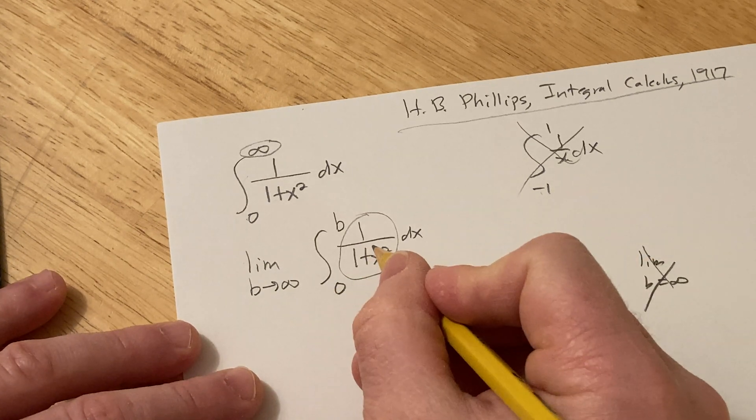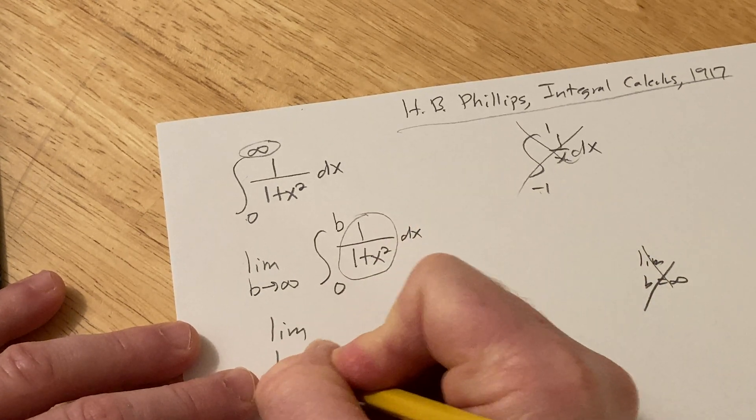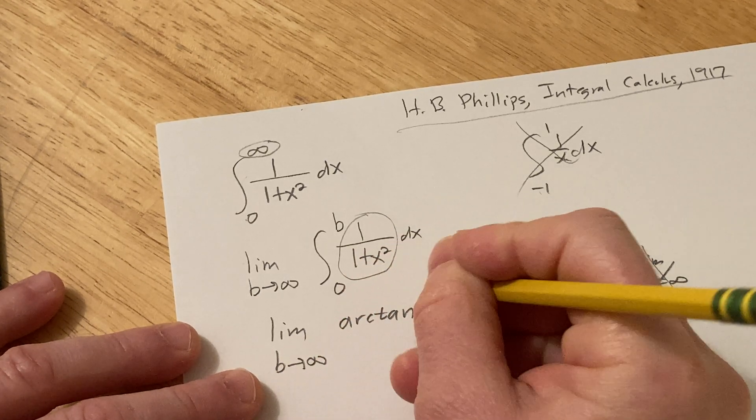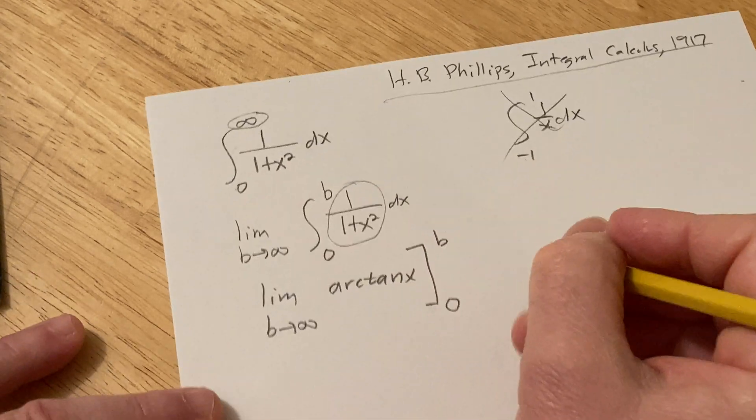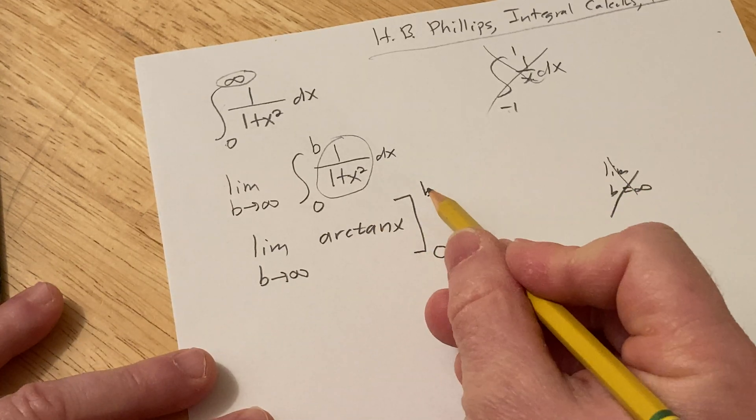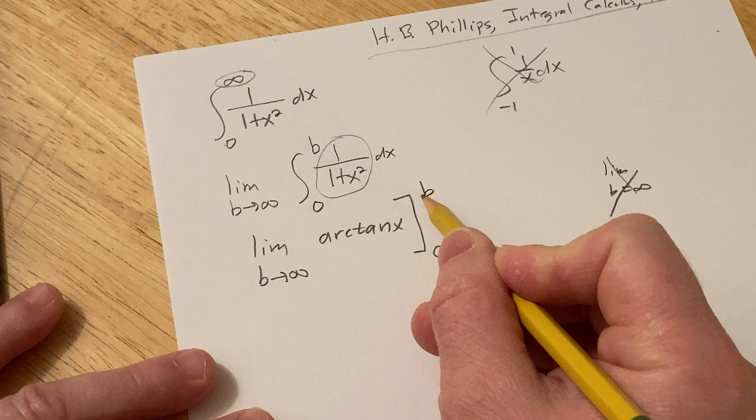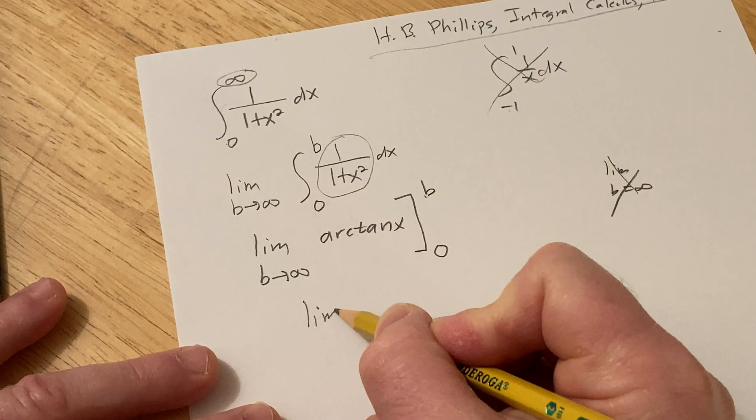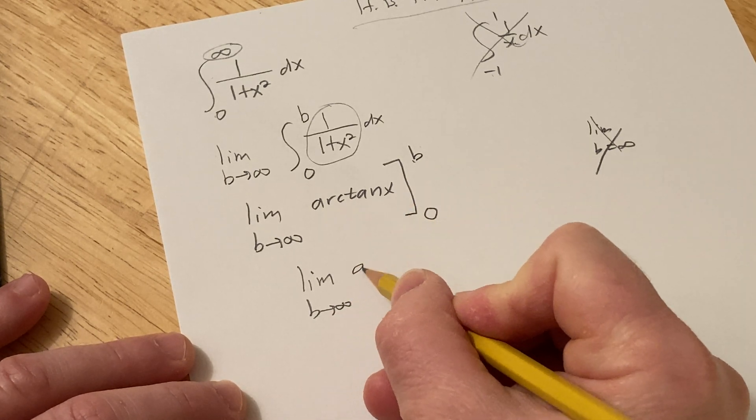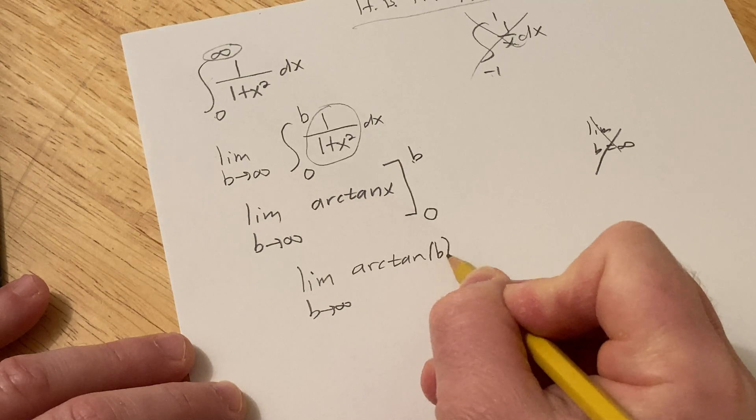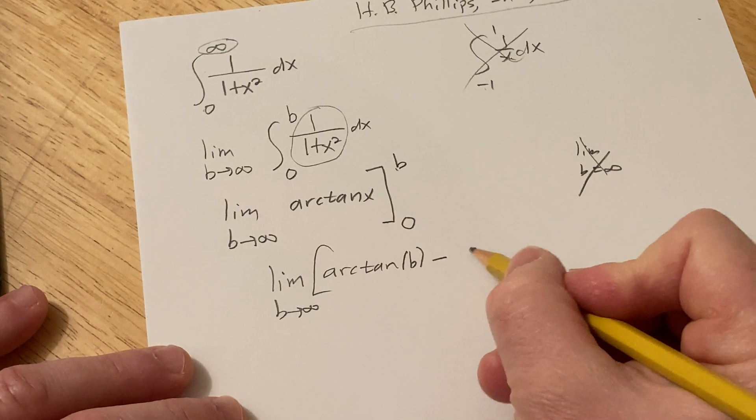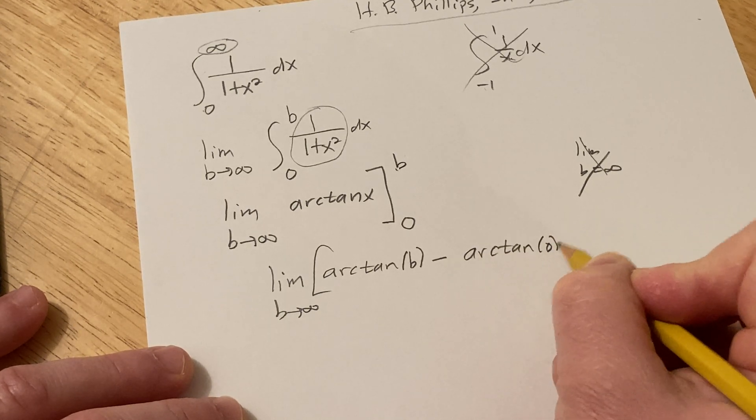This here is going to give us arctan, so this is the limit as B approaches infinity of the arc tangent of x, and we're going from 0 to B. And that's just a formula from calculus that people memorize. When you have a definite integral like this, you first plug in the upper limit of integration. So this is the limit as B approaches infinity of arctan of B, so arc tangent of B, and then you subtract, and then you plug in the 0, so this would be arctan of 0.